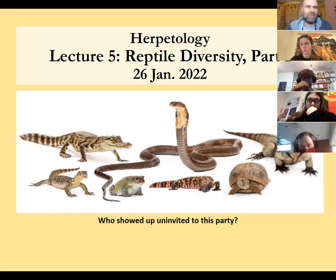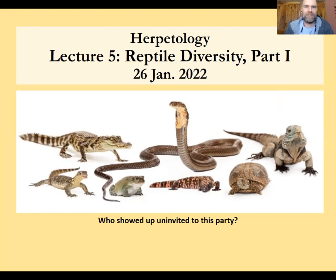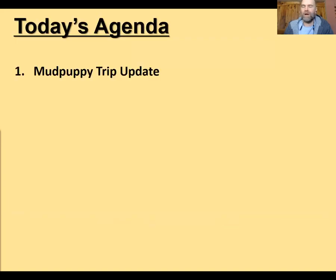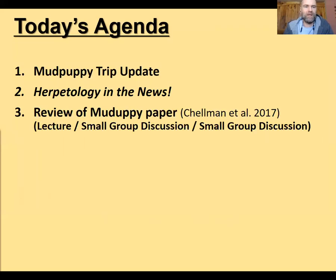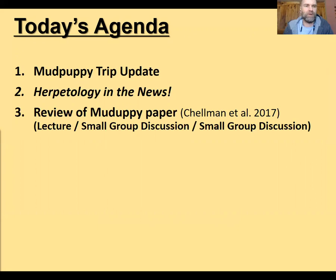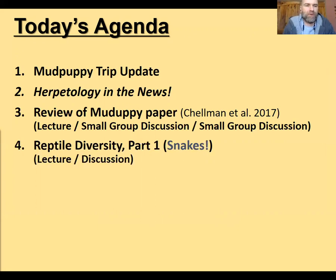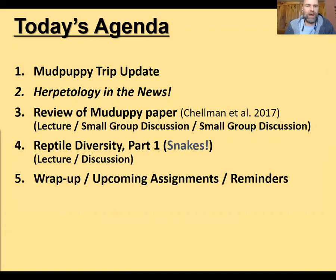We did not have a class program in advance today because we were expecting to be out catching mud puppies. With that in mind, we're going to continue our class material and start in on reptile diversity. So our class today looks like this: a quick update on our mud puppy trip, which has been rescheduled; a herpetology in the news segment; we're going to revisit the Chalman et al. 2017 mud puppy paper that you read for Monday; and then I'll start a short lecture on reptile diversity.